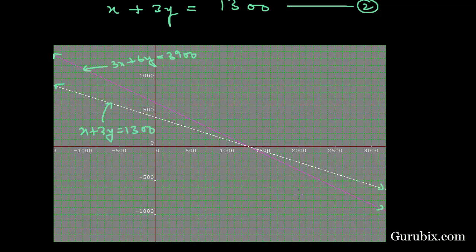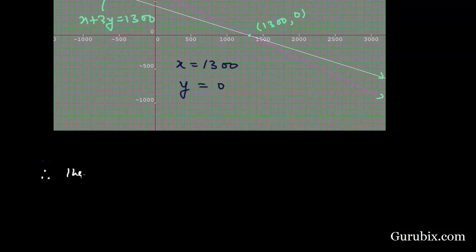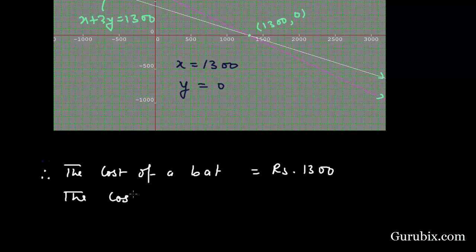We observe that the two lines meet each other at the point 1300, 0. This means X equals Rs 1300 and Y equals 0. The cost of a bat is Rs 1300 and the cost of a ball is 0.